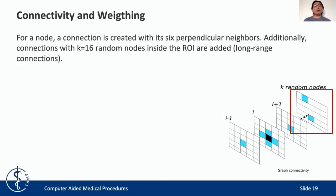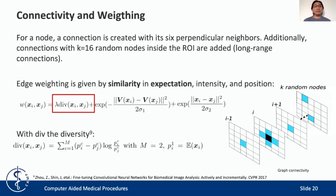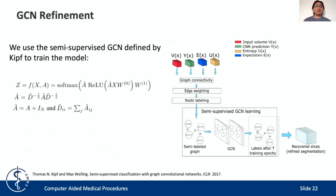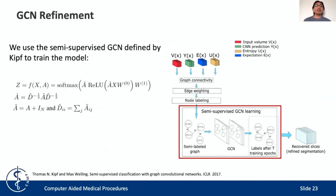Regarding weighting, we use similarity in expectation given by the entropy, and also keep the similarity in intensity and position, as used in the conditional random field refinement algorithm. With all this, we have defined a partial label graph that can be used to train a graph convolutional network in a semi-supervised way. We can use different methods from the state of the art, for example the method proposed by Thomas Kipf, to train a GCN model on partial label data, and once we have trained this model, we use this GCN to evaluate the entire graph and obtain the refined segmentation.